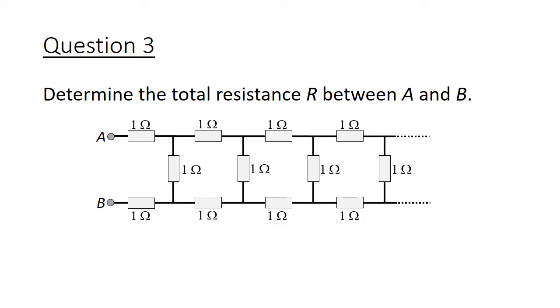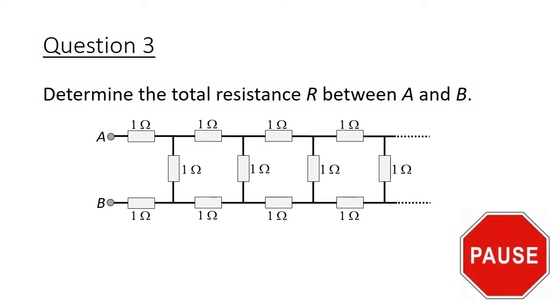For question 3, I thought we'd take a break from Math Olympiad and have a look at the Physics Olympiad problem. Let's have a look at this resistance circuit problem. Calculate the total resistance R between point A and point B. Pause the video here and give this question a good try.